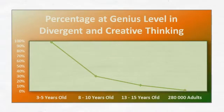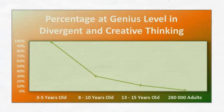George Land's research into divergent and creative thinking revealed some startling results. The creative and divergent thinking of 1,600 children aged 3–5 was assessed using the same assessment that NASA uses to select engineers and scientists. At 3–5 years old, 98% of the children scored at genius level in divergent and creative thinking. The same children were assessed 5 years later, and at 8–10 years old, only 30% still scored at genius level.